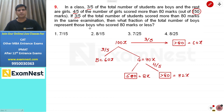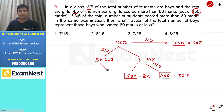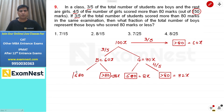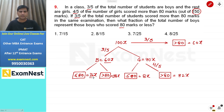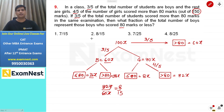Total 60x students ने 80 से ज़्यादा marks लिए, उनमें से girls 32x हैं, तो boys जिनके 80 से ज़्यादा marks = 60x - 32x = 28x। Boys जिनके 80 marks या कम = 60x - 28x = 32x। Total boys = 60x। Fraction = 32x/60x = 8/15। Second option हमारा answer।